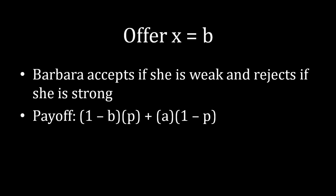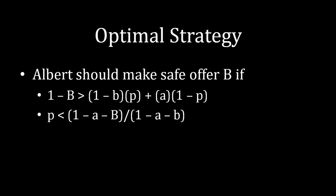So that's the left side of the payoff. And on the right side of the payoff, we know that Barbara is strong with probability 1 minus p, and so Albert just receives his outside value in that case, which is a. And so your optimal strategy, if you're Albert, is to make the safe offer of uppercase B if your payoff for making that offer, 1 minus uppercase B, is greater than the payoff from the last slide. Now, if we solve for p, that's the probability that Barbara is weak, we would see that you should make the safe offer as Albert if p is less than 1 minus a minus uppercase B divided by 1 minus a minus lowercase b.